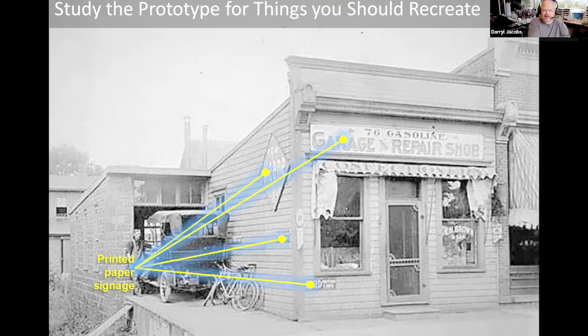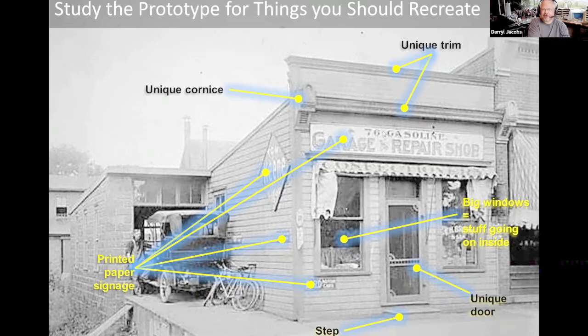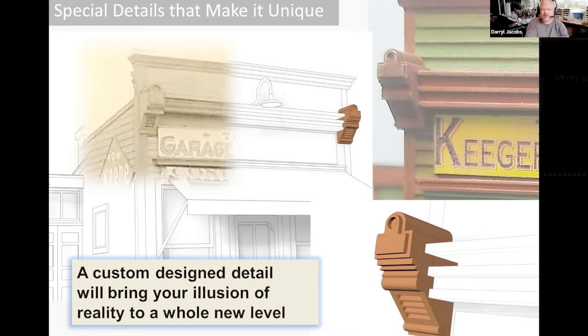You notice there's unique trim on this building that brings a personality to it, and things like a step that you might not notice until you actually think about it. The door has a unique look and feel, and of course there are big windows — that means there should probably be stuff going on inside, otherwise the viewer is going to look at it and say there's nothing going on. This particular building has unique cornice trim that I hadn't seen anywhere else, so I wanted to make sure I could figure out how to represent that. The cornice trim was easy to do in 3D printing. I had to create a file to generate and represent what was on the original building, and tried to do a fairly close representation of what it was.